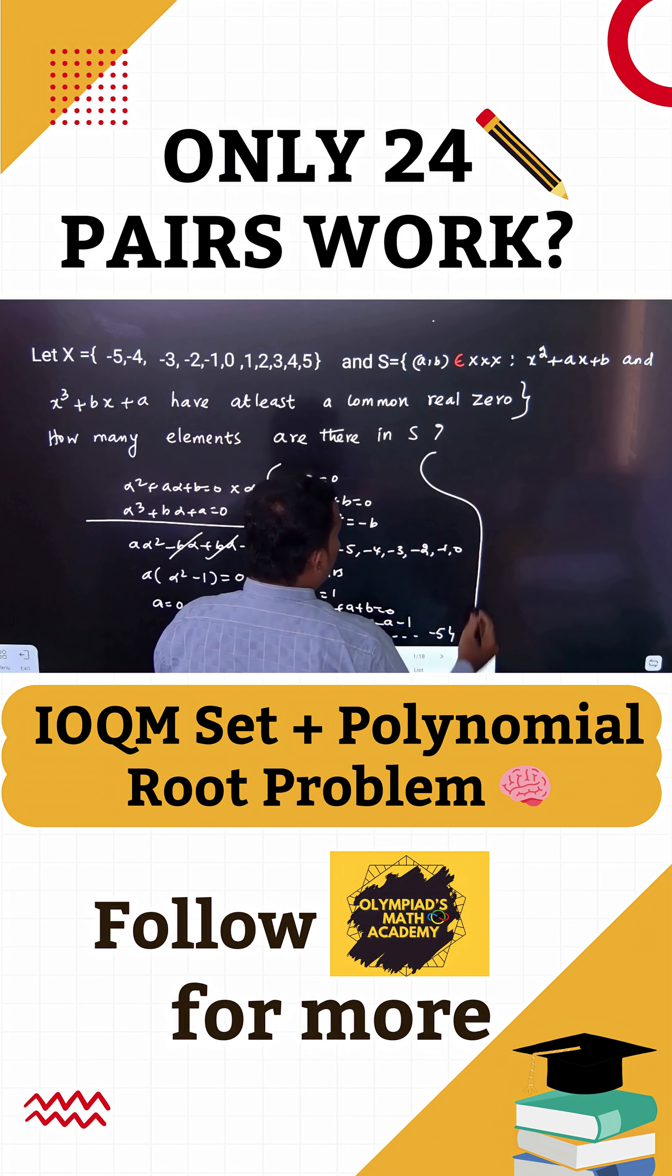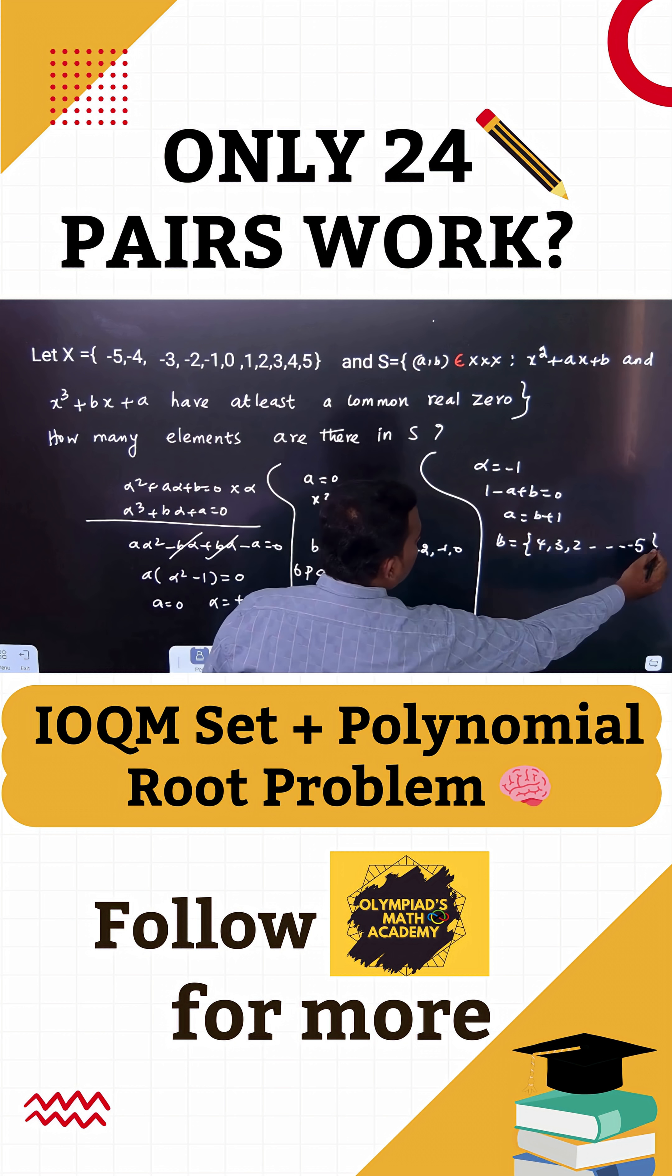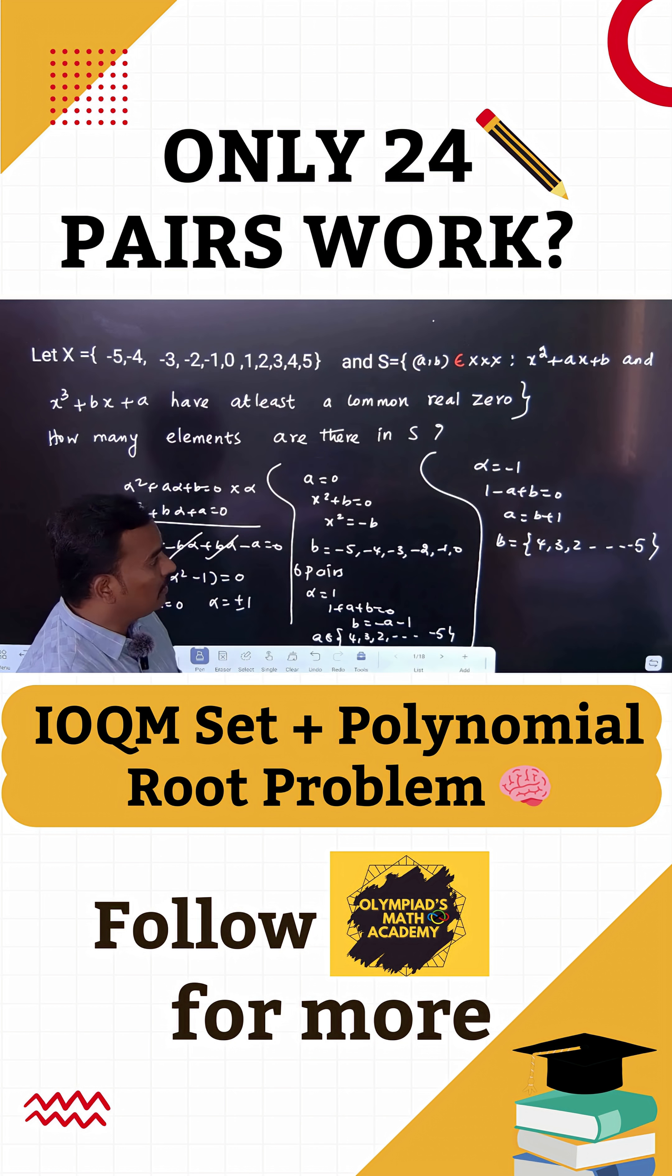Let us take alpha equals minus 1. Then 1 minus A plus B equals 0, so A equals B plus 1. What are the B values? The same: 4, 3, 2 down to -5 are possible. There are 10 pairs possible, but you can see (0, -1) will be repeating here.